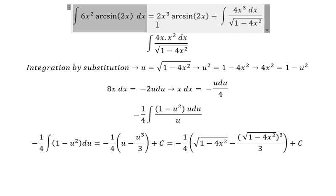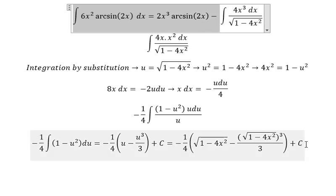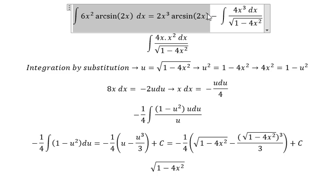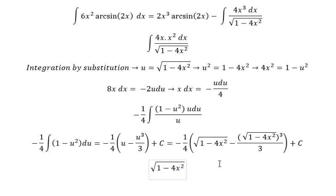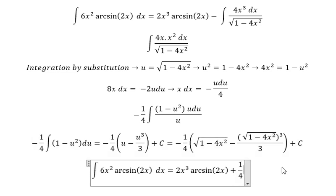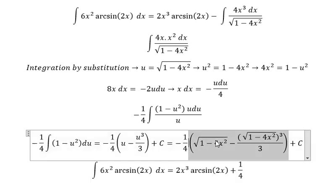Now we compile the final answer. Because we have the negative here, we get positive 1 over 4 multiplied by this expression, giving us the complete result.